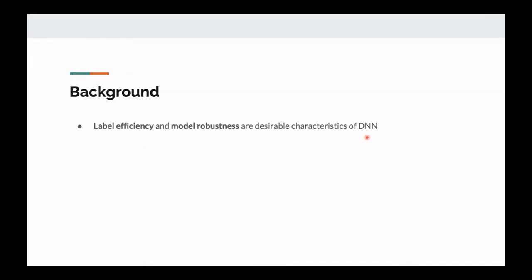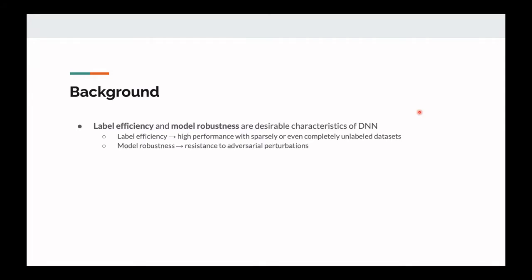For the background of this paper, the first thing the authors mention is that some desirable characteristics of deep networks are label efficiency and model robustness. Label efficiency is the idea of achieving higher performance with sparsely or even completely unlabeled datasets. Model robustness is just the resistance to adversarial perturbations that we've been talking about.